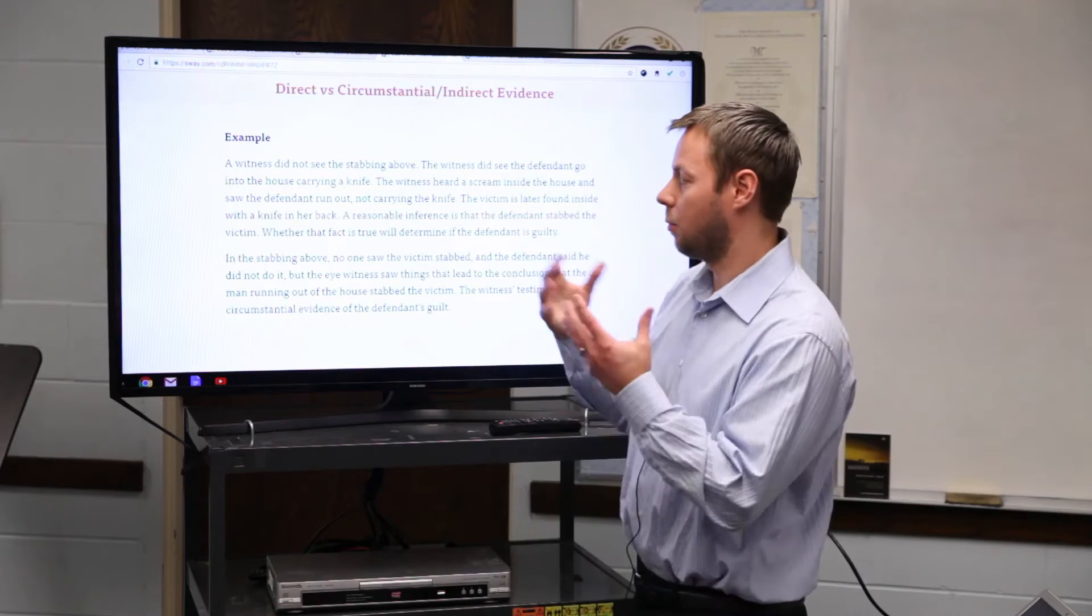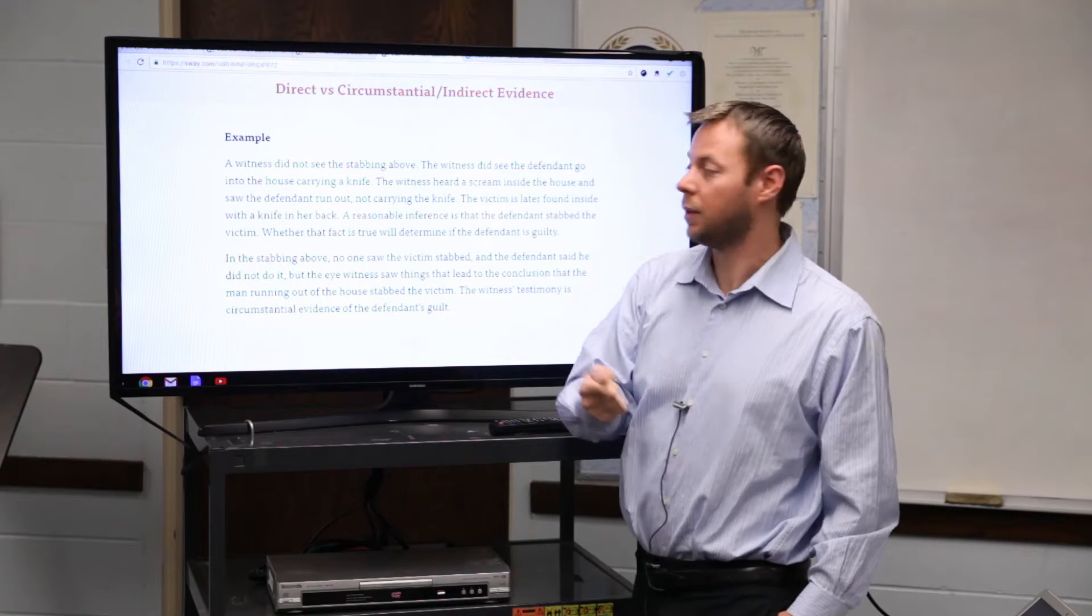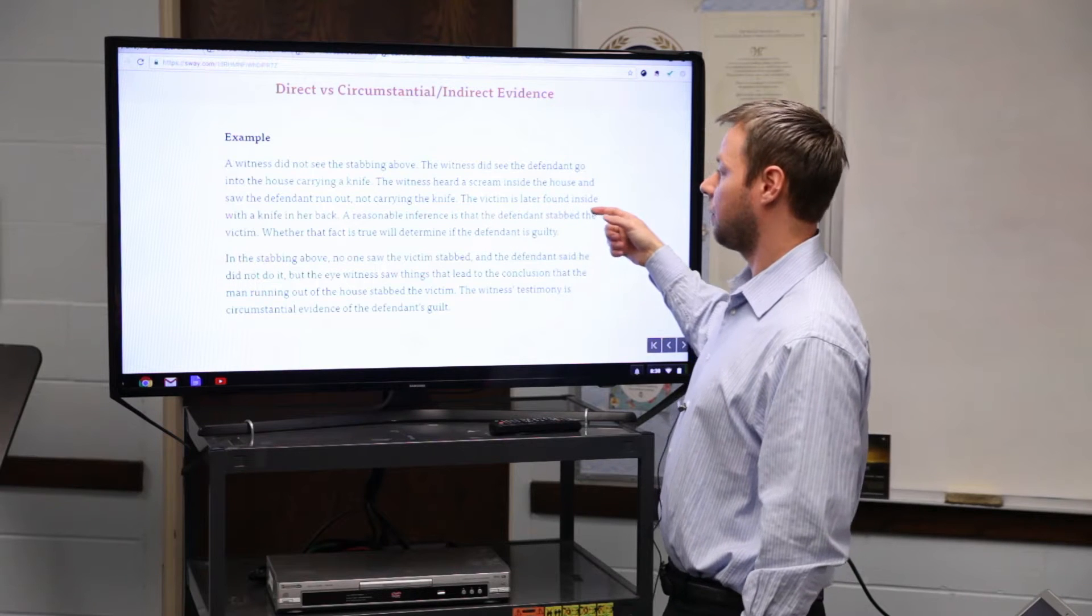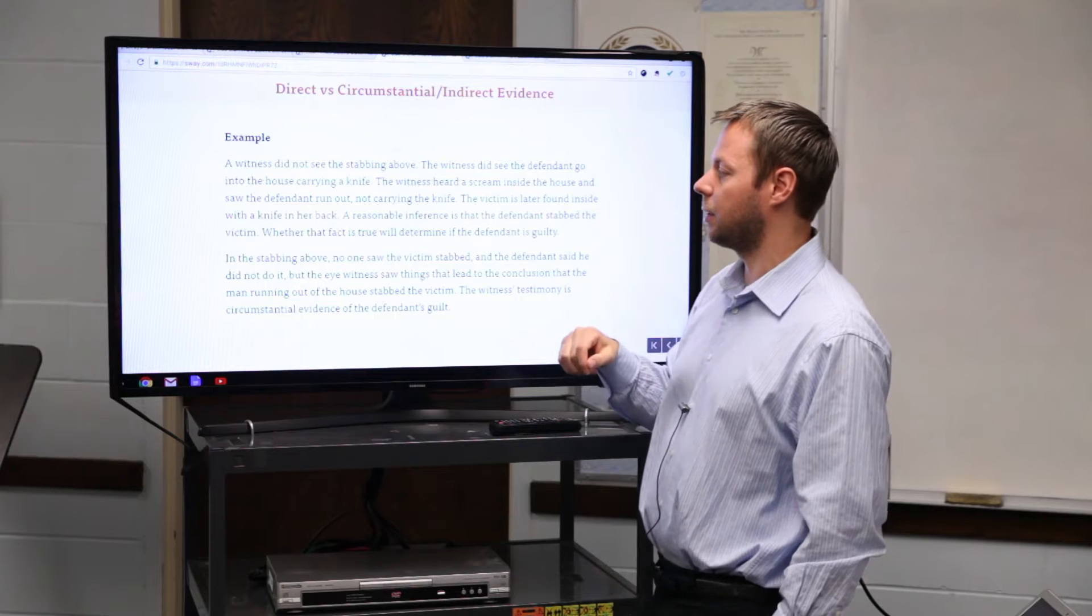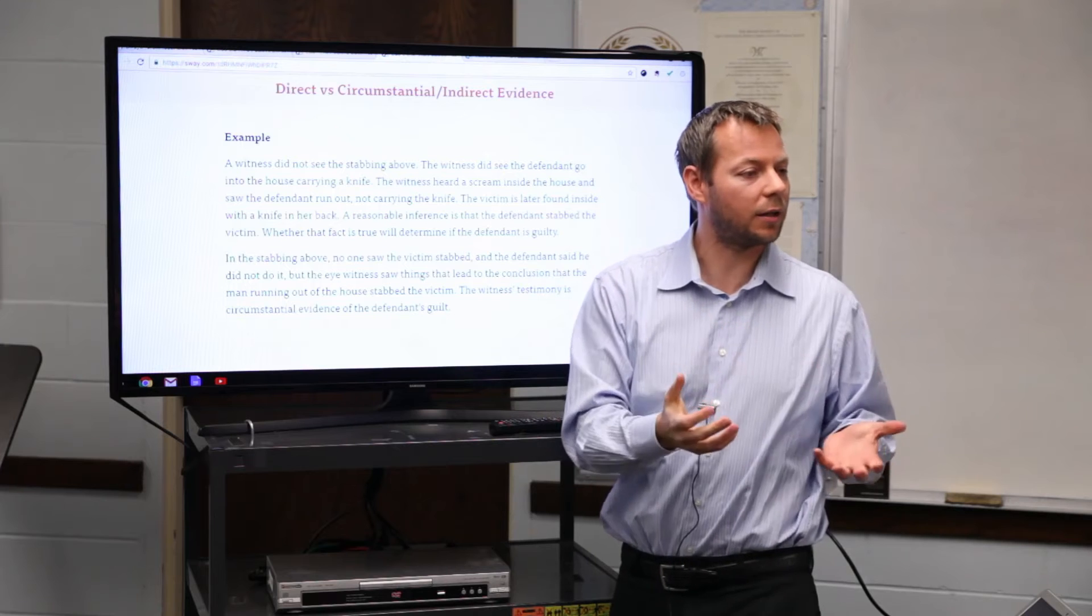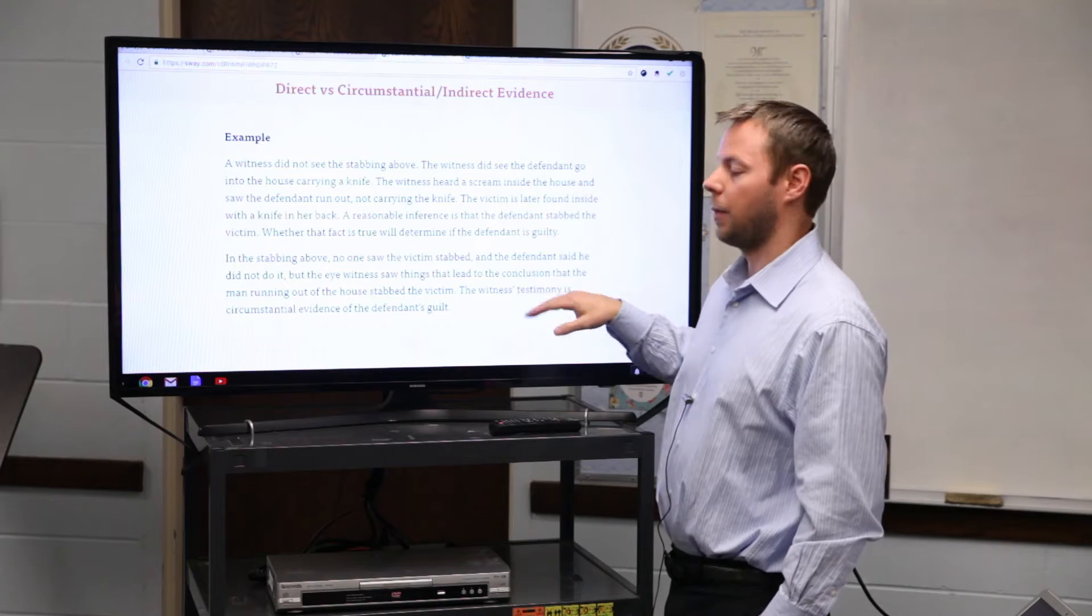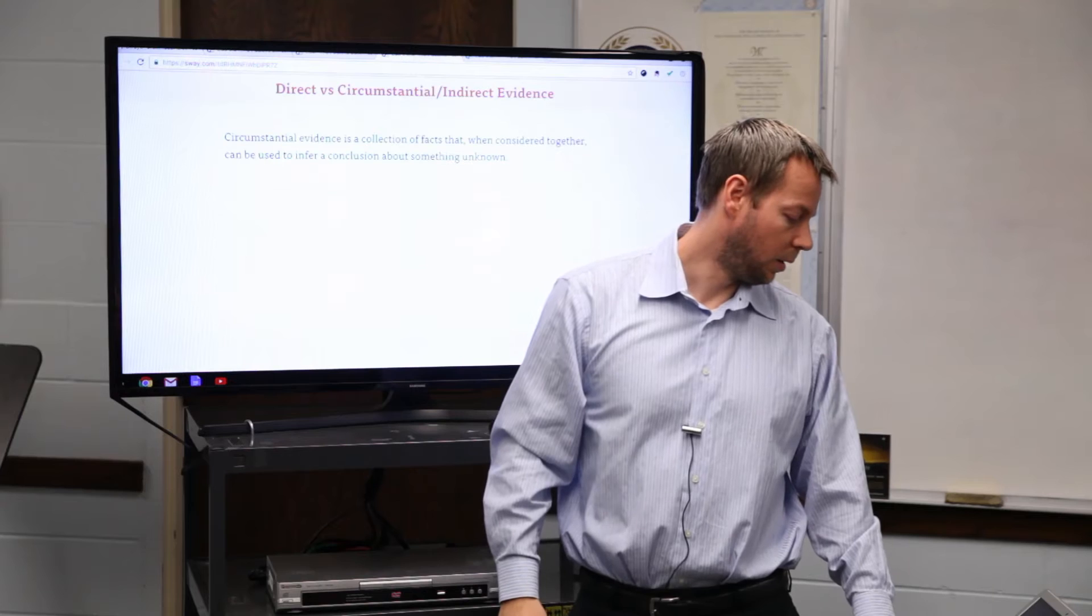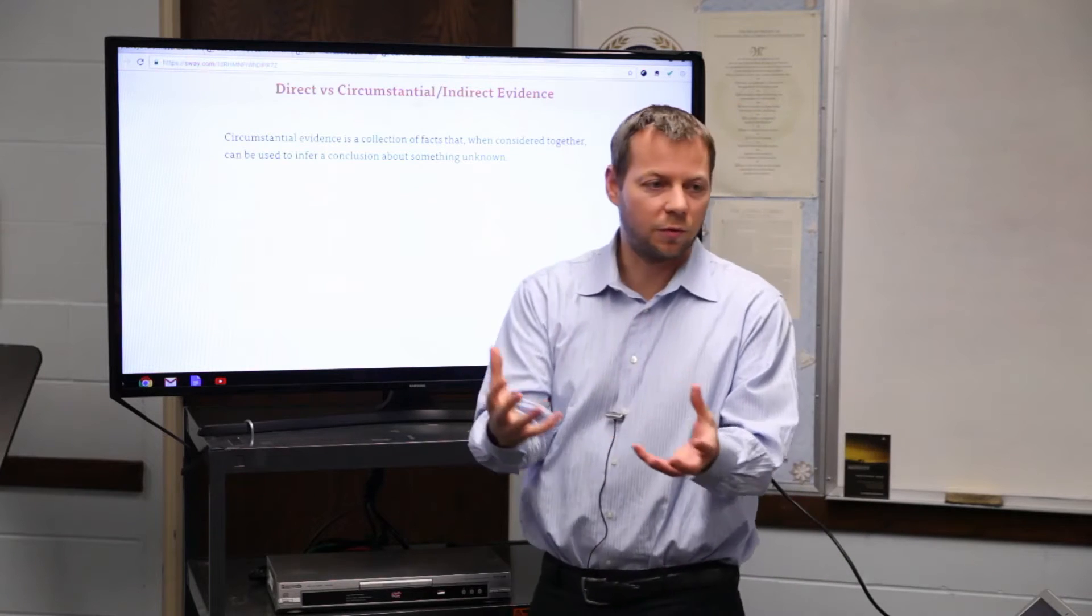Circumstantial, sometimes what's called indirect evidence, is direct evidence of a fact which reasonably infers the existence or non-existence of another fact. So it is not direct observation of the fact that is in dispute. What would be an example in our murder case? The witness didn't see the stabbing. Instead, the witness saw the defendant go into the house carrying a knife, heard a scream inside the house, saw the defendant run away not carrying the knife. Victim is later found inside with a knife in her back. The reasonable inference is the defendant stabbed the victim. So notice in the above, no one actually saw the act. That's circumstantial evidence.